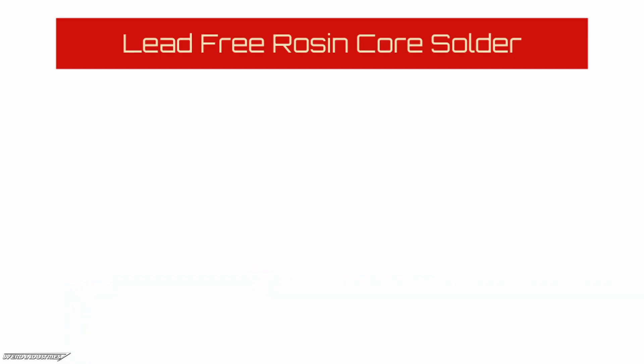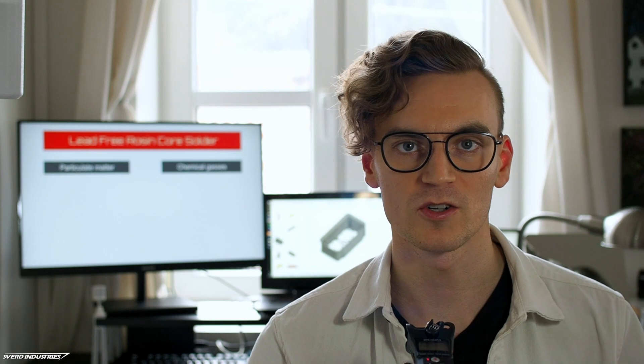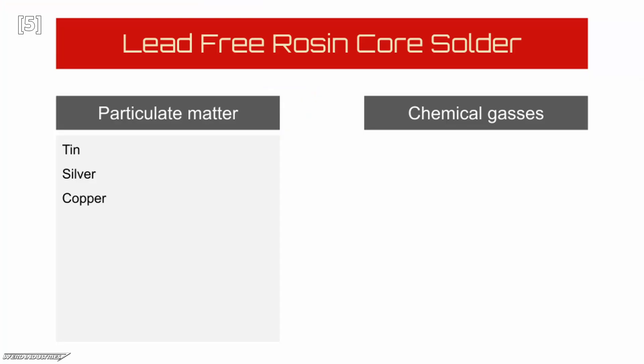Let's begin with a very short and sweet science lecture. I'm basing this explanation on lead-free rosin core solder, which is the most common type used by hobbyists, and the byproducts are mainly two different categories: particulate matter and chemical gases. The particulate matter is created when particles are so small they become airborne and start drifting in the air around us.